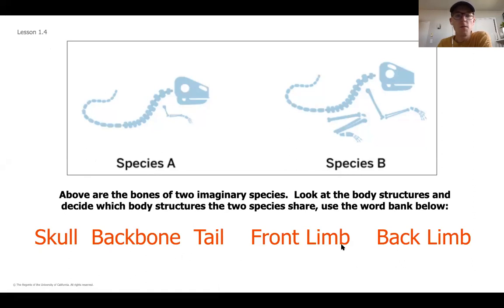I want you to think about these five different structures in orange down here. Take a second, pause the video, and write out what are all of the structures that you notice that these two species have out of this list in orange. Take a second to pause the video, jot it down, or think through which are the five that you think both species A and species B share.